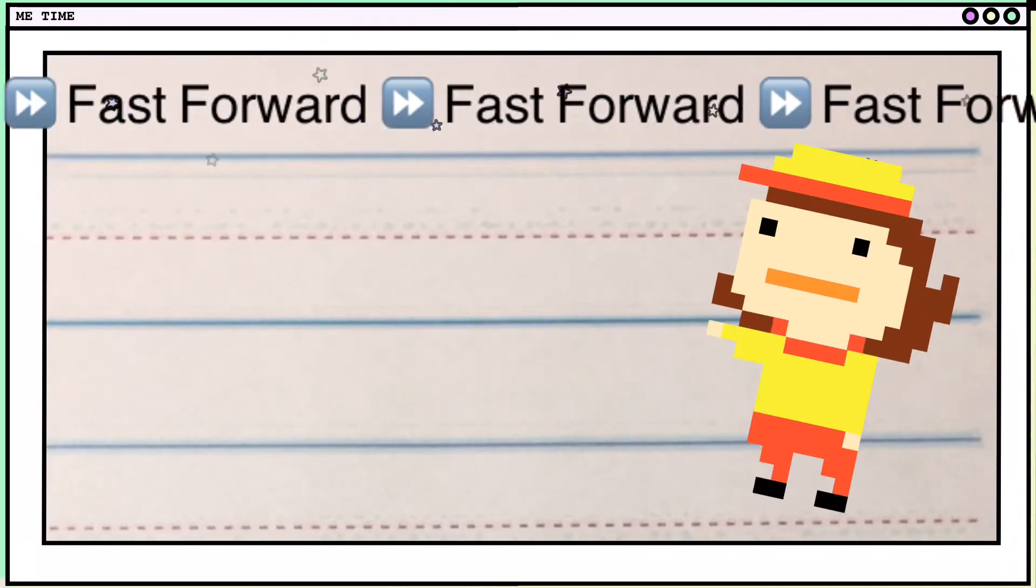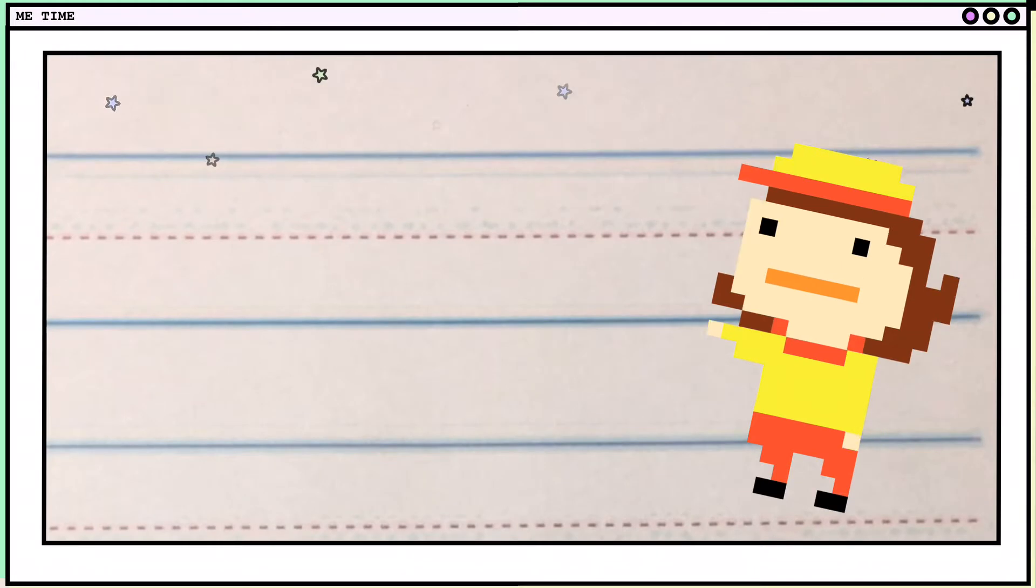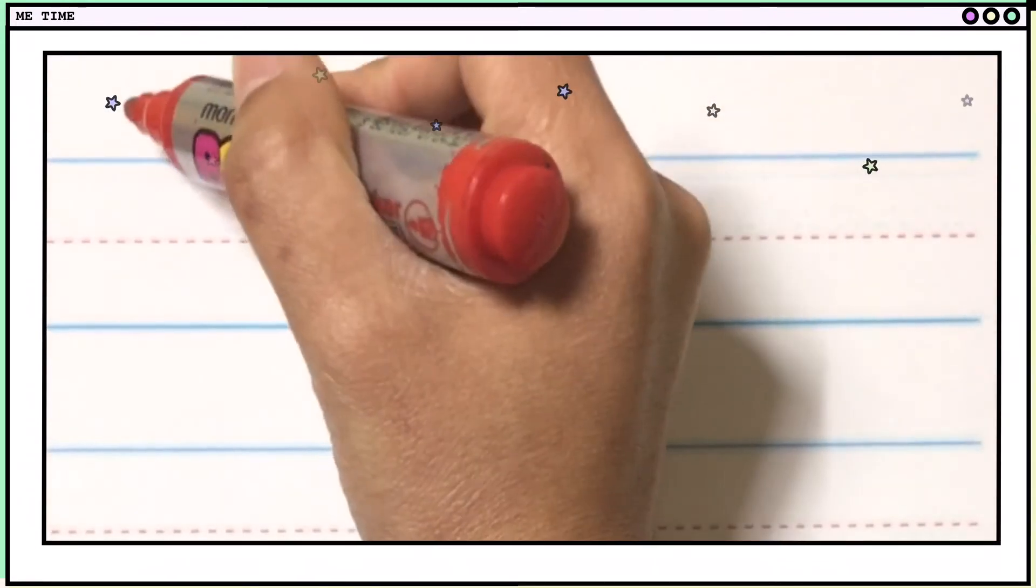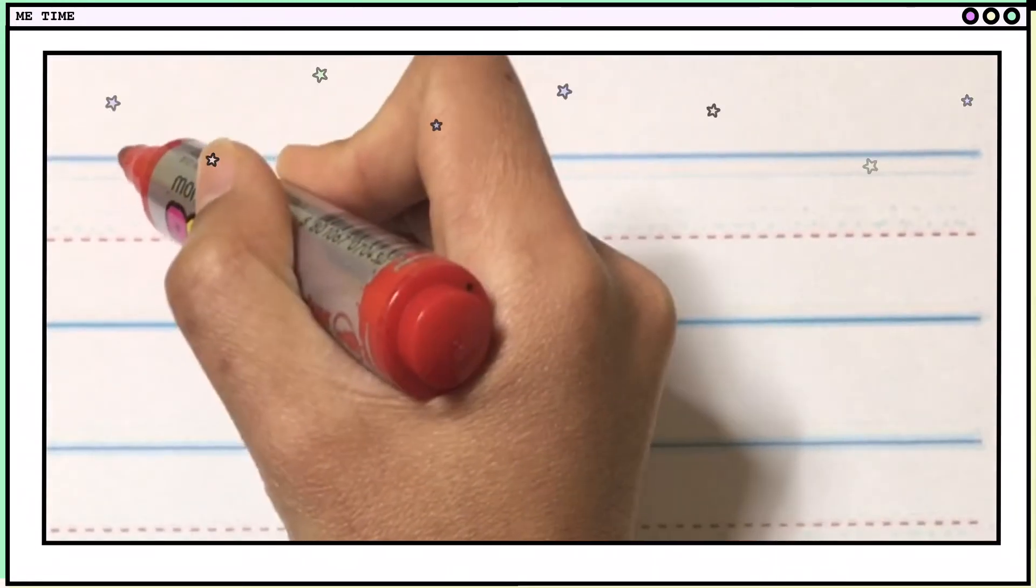Now, we are going to practice writing the alphabet from A to L. We will write the big and small letters. But first, I want you to get your pencil, your paper, or your writing notebook. Or anywhere you can practice writing your alphabet. Okay, get ready. Let's write first letter A. Big A and small A. How do you write it?